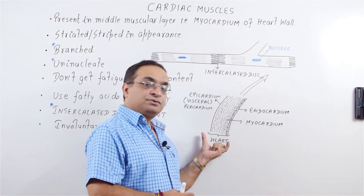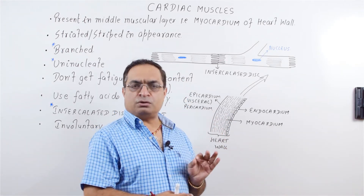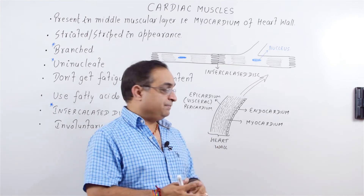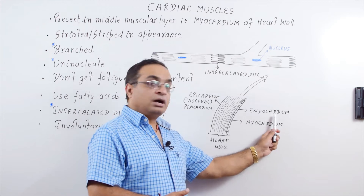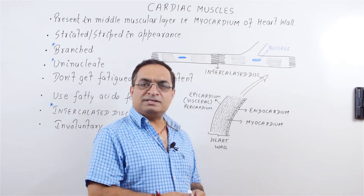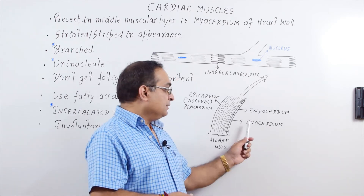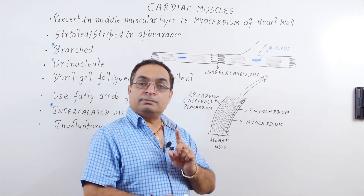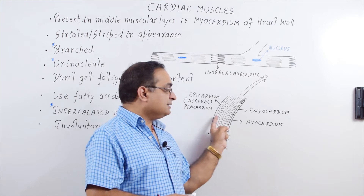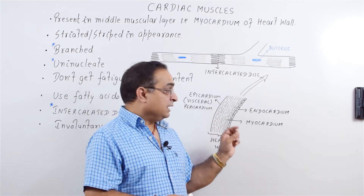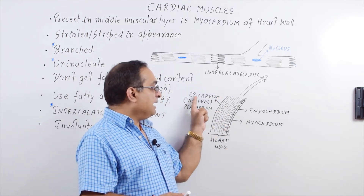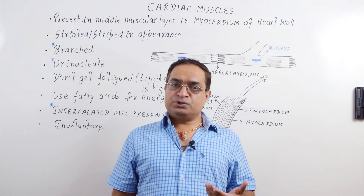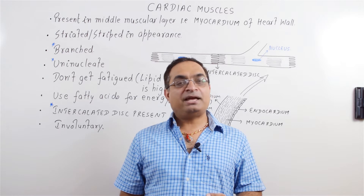In this diagram I have shown a very simplified version of the heart wall. The heart wall consists of three layers: the innermost endocardium, which is simple squamous epithelial cells; the middle myocardium — the word myo is related to muscles, and myocardium is the thickest layer of the heart wall; and the outermost layer, which is the epicardium or the visceral pericardium.